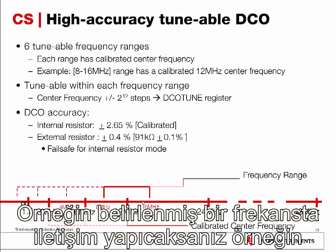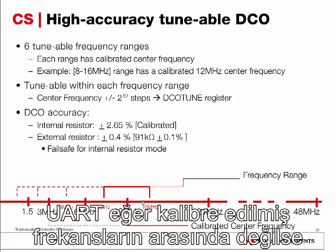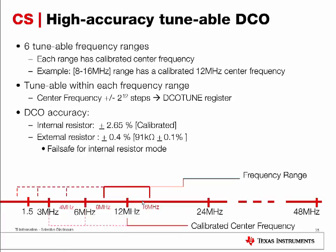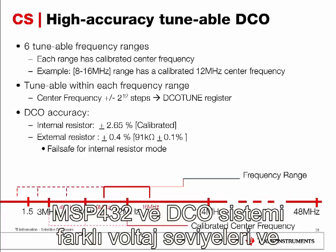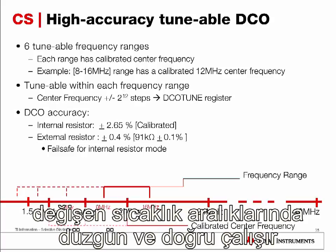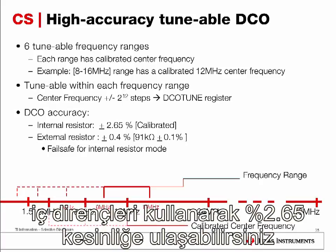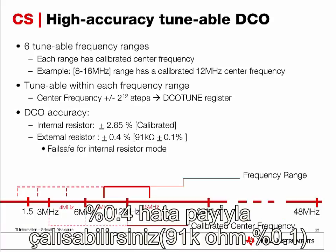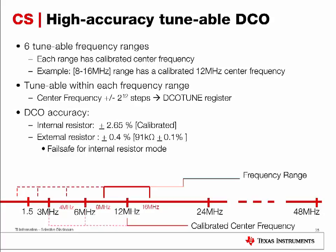If you have a particular communication baud rate or UART configuration, for example, that is not met by any of the existing calibrated frequencies, you can use this on-the-fly tuning capability to determine your exact frequency. The DCO on MSP432 also maintains high accuracy across temperature and voltage. Using the internal resistor, you can achieve around 2.65% accuracy. However, you do have the option to improve this accuracy all the way down to 0.04% using one external resistor of 91 kilohms with 0.1% tolerance.